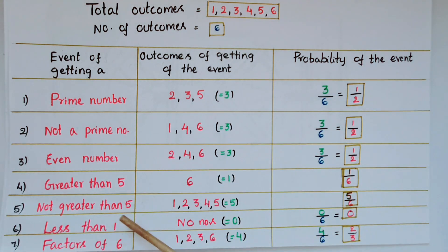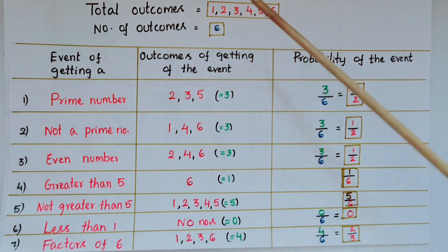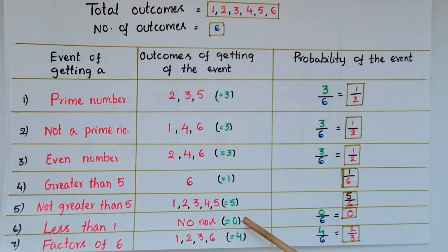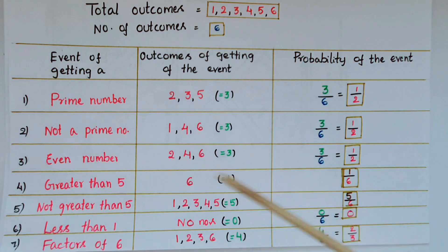Next one is less than 1. Here, less than 1 — there are no numbers. So the outcomes here are 0. So probability of this event is 0 by 6, that is 0.